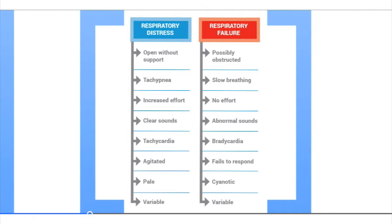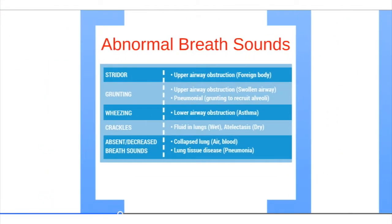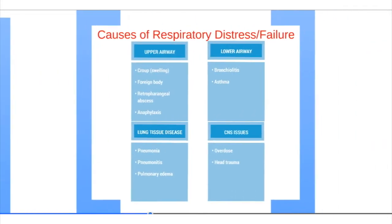Abnormal breathing sounds include stridor, grunting, wheezing, crackles, and absent or decreased breathing noises. These are key indicators to listen for when assessing a patient's respiratory status.